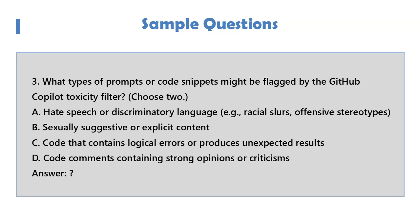Question 3: What types of prompts or code snippets might be flagged by the GitHub Copilot toxicity filter? Choose two. A. Hate speech or discriminatory language, e.g., racial slurs, offensive stereotypes. B. Sexually suggestive or explicit content. C. Code that contains logical errors or produces unexpected results. D. Code comments containing strong opinions or criticisms.